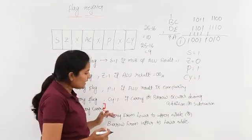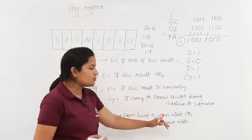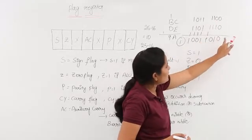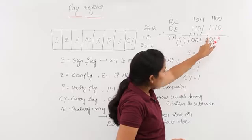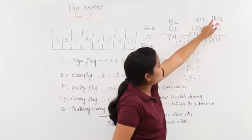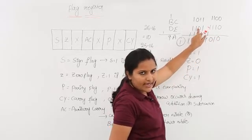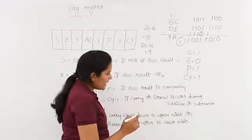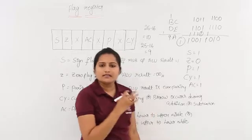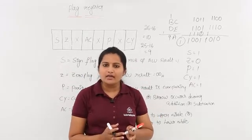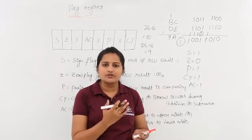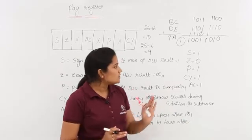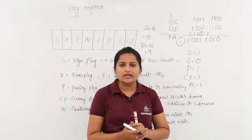Coming to auxiliary carry: carry from lower to upper nibble, or borrow from upper to lower nibble in subtraction, sets the auxiliary carry to 1. Looking at the binary addition, this is the lower nibble and this is the upper nibble. In the addition of three 1s we got 1 with carry 1, and this carry was carried from the lower nibble to the upper nibble. So the auxiliary carry value is also equivalent to 1. However, the programmer cannot access the auxiliary carry — it is internally used by the computer. Like this, the flag register sets its values according to the operations performed.